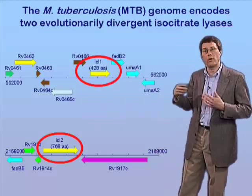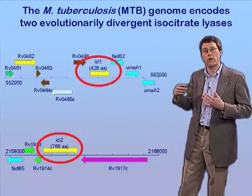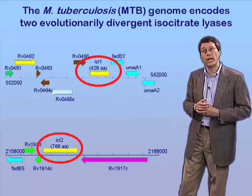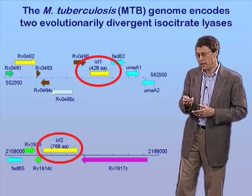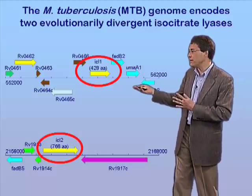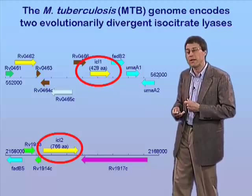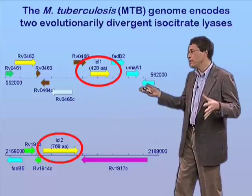In terms of evolution, ICL1 looks for all the world like a typical eubacterial isocitrate lyase. ICL2 is a real outlier — it looks more like a plant or fungal isocitrate lyase, and we have no idea how it got there. There's an interesting evolutionary problem that has yet to be understood. The question we wanted to address is: what happens if we delete these genes from the chromosome of M. tuberculosis? What impact would those mutations have on the ability of these bacteria to metabolize, to grow, and to persist in the lungs of a mammalian host? We deleted ICL1, we deleted ICL2, and then we made a strain in which both genes were deleted together.